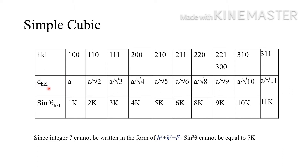The d_hkl values are: a/√1 = a, a/√2, a/√3, a/√4, a/√5, a/√6, a/√8, a/√9, a/√10, a/√11, etc. The corresponding sin² theta values are: K×1 = K, 2K, 3K, 4K, 5K, 6K, 8K, 9K, 10K, 11K.